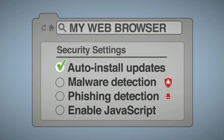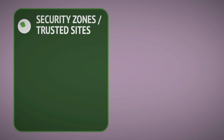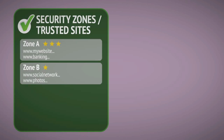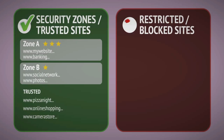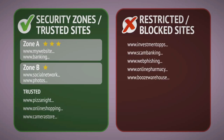Also enable any malware and phishing protection or warnings. You may want to consider disabling JavaScript due to past vulnerabilities, and only use it for sites you trust. Some browsers allow you to set up security zones or lists of trusted sites, or alternatively specific sites you wish to restrict or block. Take some time to set these up to your own preference.